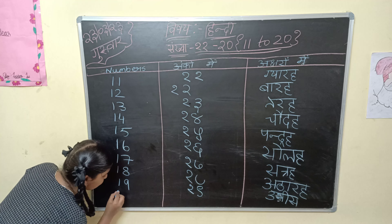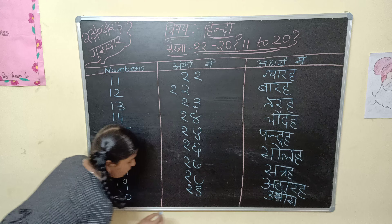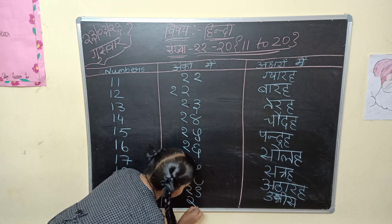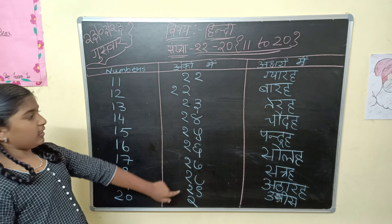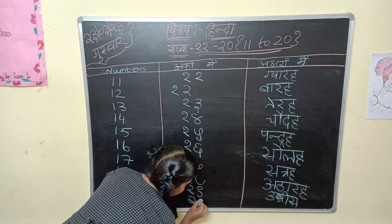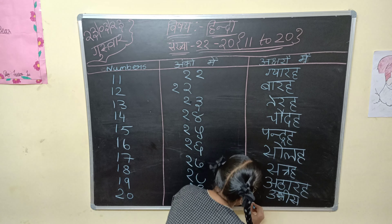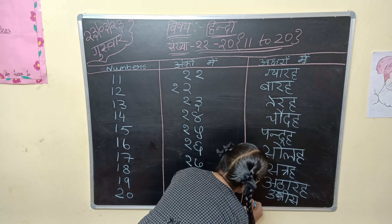Then 20 is bis. So it has 'dis.' 2 and 1 has bis. 20 is bis.